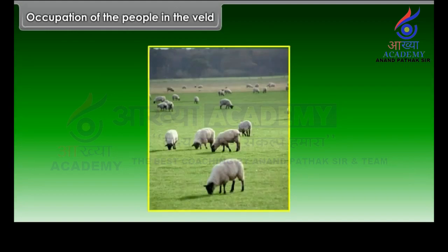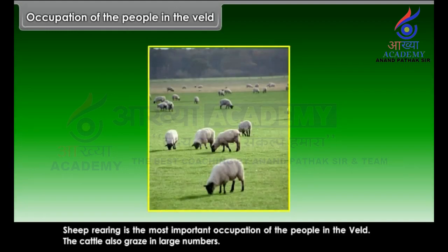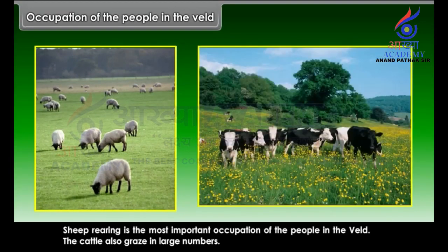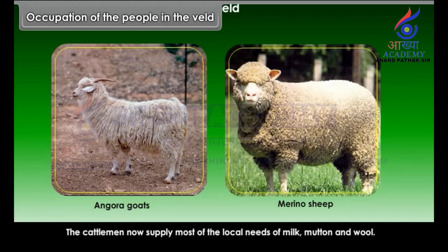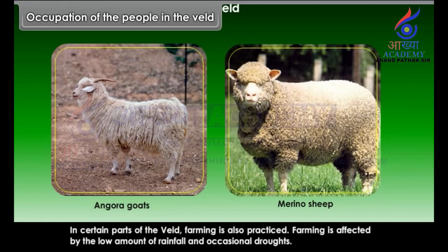Sheep rearing is the most important occupation of the people in the Veld. The cattle also graze in large numbers. The Angora goats and Merino sheep of this region are known for their fine quality of wool. The cattlemen supply most of the local needs of milk, mutton, and wool. In certain parts of the Veld, farming is also practiced, though it is affected by the low amount of rainfall and occasional droughts.